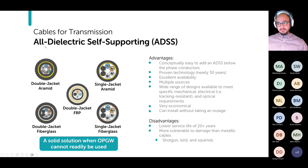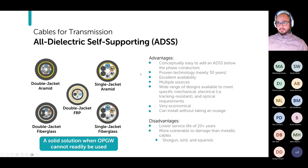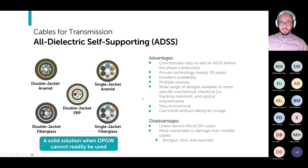Next up is ADSS, or all dielectric self-supporting cables. Like OPGW, it has several different design variations: double jacket designs with either Aramid or fiberglass, single jacket designs with Aramid or fiberglass for less robust applications, and you can even use FRP in lieu of either Aramid or fiberglass. It's conceptually easy to add ADSS below your phase conductors. Like OPGW, it's a proven technology that's been around 30 plus years, with excellent availability and multiple manufacturing sources. It also has a wide range of designs with different jacket properties, and tracking resistance is available if needed.